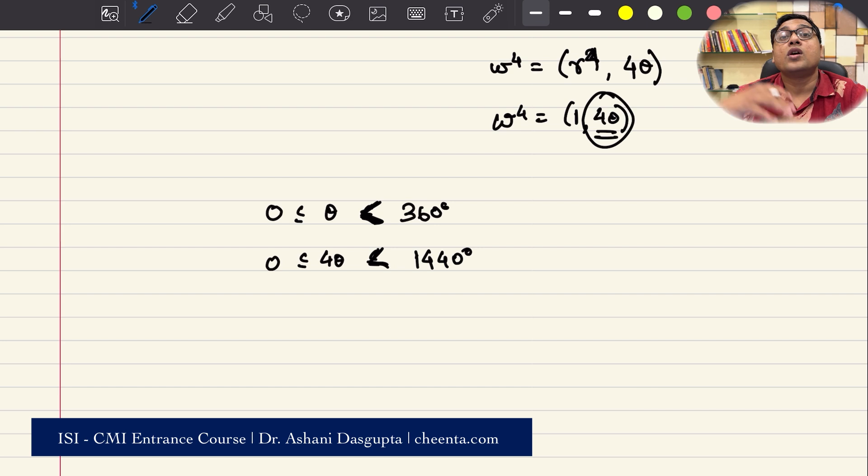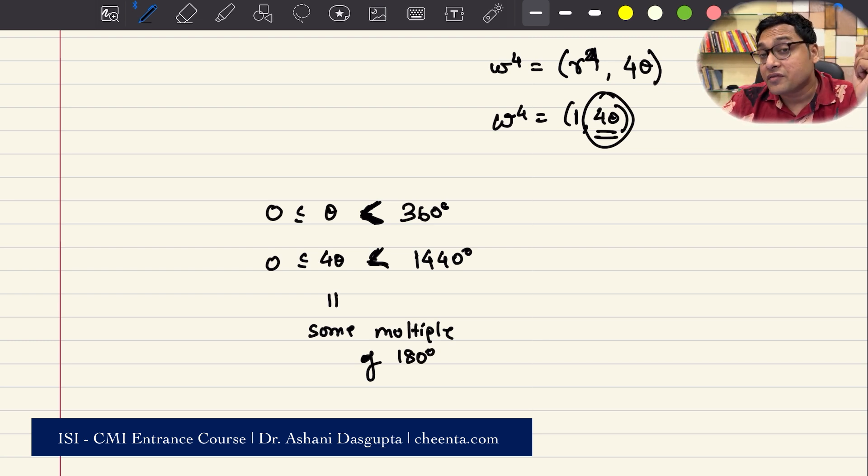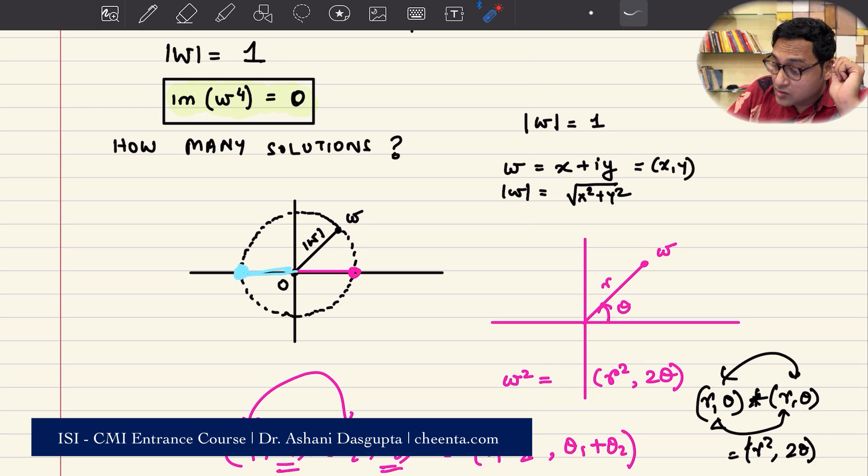0 inclusive, 360 non-inclusive. So 4 theta is between 0 and 4 times 360 which is 1440. Now you want all the multiples of 180 degree between 0 and 1440, not inclusive 1440, because whenever 4 theta is equal to some multiple of 180 degree, the point is on the x-axis. It's either on the positive end of the x-axis or on the negative end of the x-axis. In both situations imaginary part is 0, which is great.